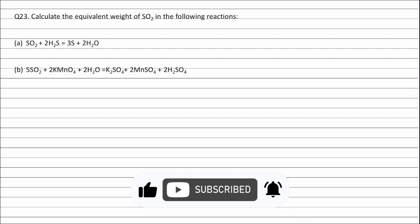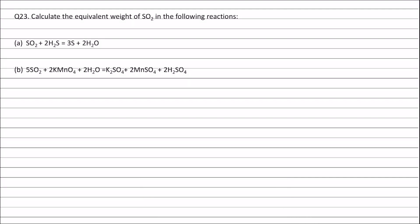The first equation is sulfur dioxide plus H₂S forming sulfur and H₂O. The oxidation number of sulfur in sulfur dioxide is 4, and the oxidation number of sulfur in the product is zero. Therefore, the change in oxidation number of sulfur is 4. One mole of sulfur dioxide contains one mole of sulfur, so the change in oxidation number per mole, or valency factor, is 4.